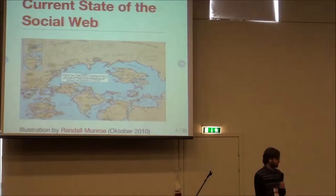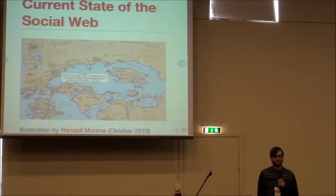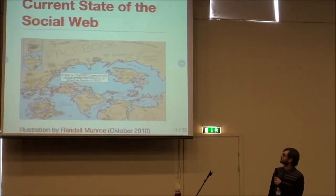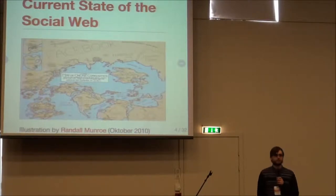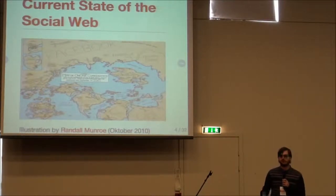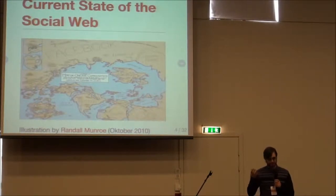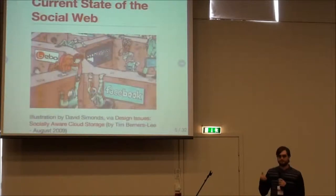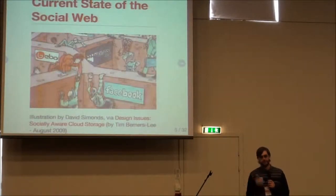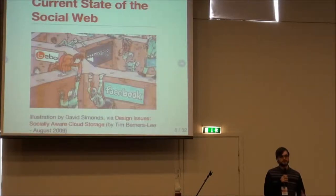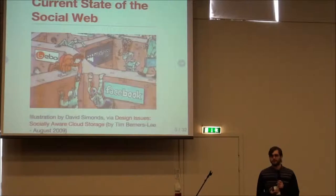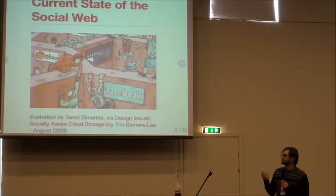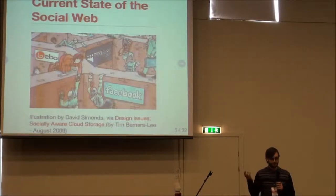Let's start with the current state. I want to show this picture from the XKCD comic strip — if you are not familiar with it, you should take a look. This picture is actually quite old, I think it's from around 2010, but it still shows how many social networks are out there. Going to the next picture, as was mentioned before, at the moment it's a walled garden. All of these social networks exist in separate infrastructures and it's really hard to integrate them or extract your data if you have separate accounts. So that's a big problem.